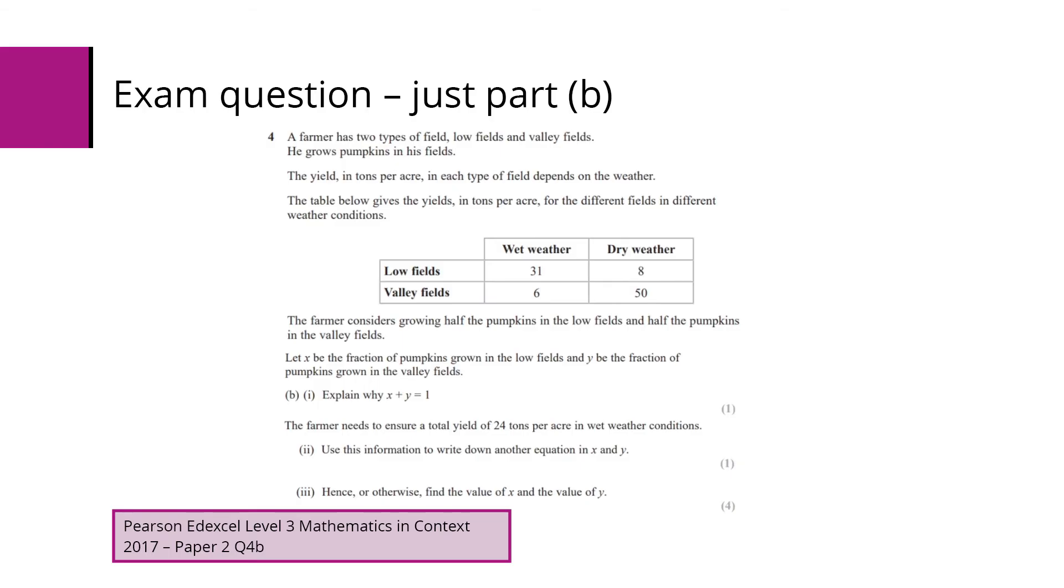Part B1 is explaining why x plus y equals 1. Then we have the farmer needs to ensure a total yield of 24 tonnes per acre in wet weather conditions. So we need to use that information to write down another equation in x and y, and then hence find what x and y are going to be.